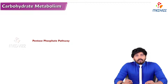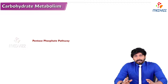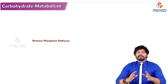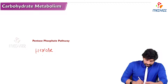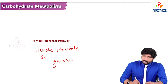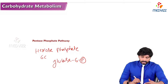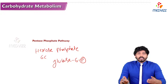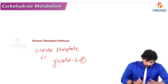Hello everyone, Dr. Suresh here. In this video we will be talking about HMP shunt or Pentose Phosphate Pathway. HMP shunt stands for Hexose Monophosphate Pathway or Pentose Phosphate Pathway. Hexose means 6-carbon, and here the main hexose phosphate in our body is glucose — glucose 6-phosphate, where the phosphate is attached to glucose at the 6th carbon. That's why it is called Hexose Monophosphate Pathway, or HMP.